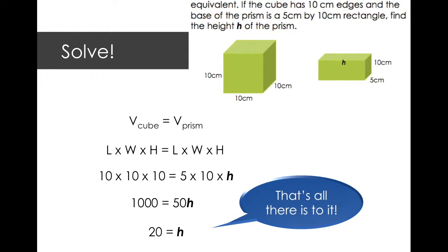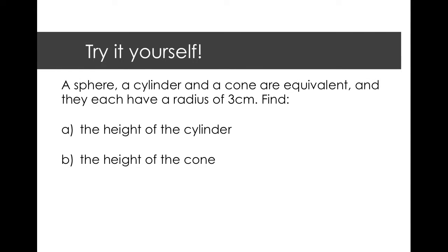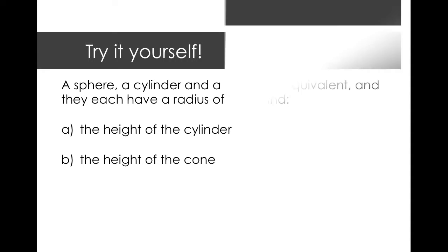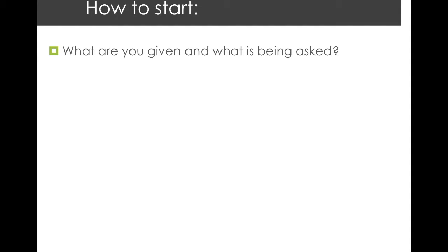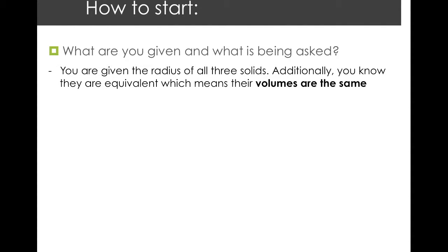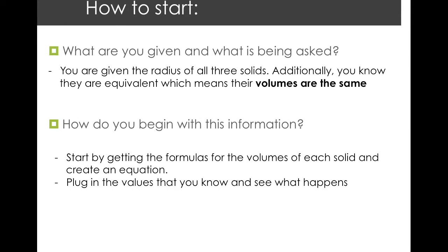And that's all there is to it. Now try it yourself. A sphere, a cylinder, and a cone are equivalent and they each have a radius of 3 centimeters. Find first the height of the cylinder and second the height of the cone. Ask yourself what you are given and what is being asked. You are given the radius of all three solids, and you know they are equivalent, which means their volumes are the same. Start by getting the formulas for the volumes of each solid, create an equation, plug in the values you know, and see what happens. I encourage you to pause this video and try it on your own before going on to the next slide.